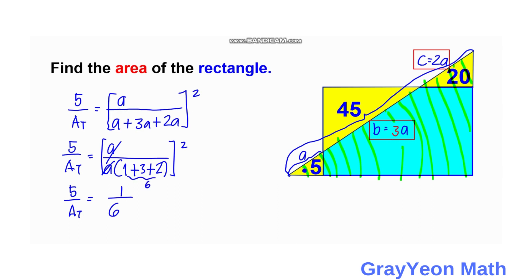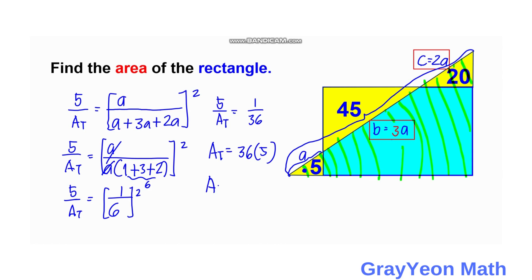Cross-multiplying, we get area T equals 36 times 5, so the area of the triangle is equal to 180 square units.